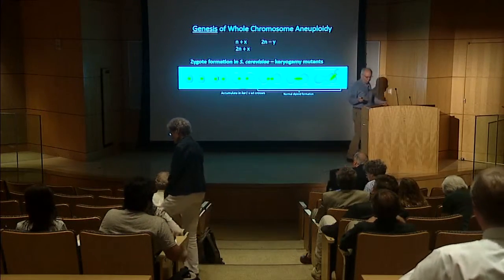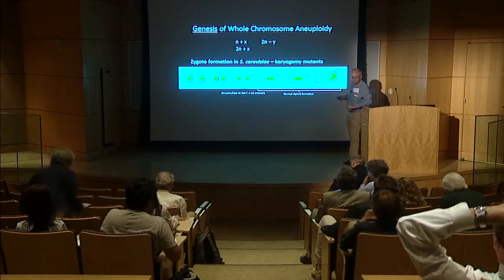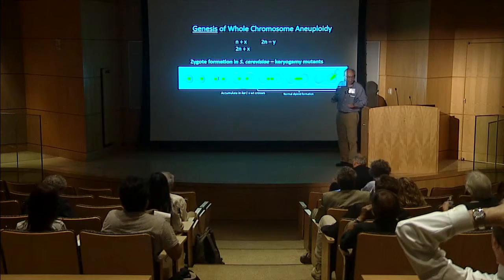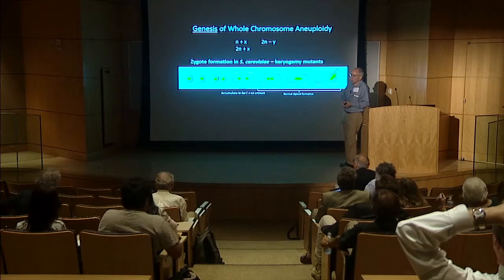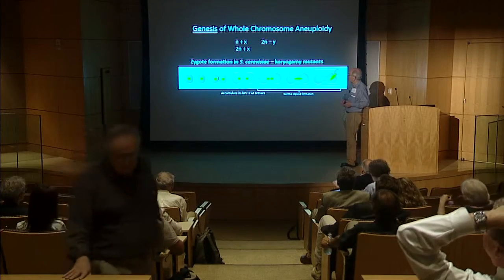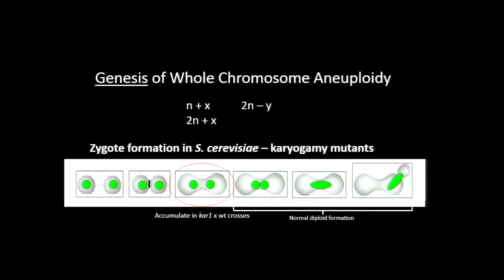Let's talk about whole chromosome aneuploidy from the genesis point of view, and this is very important. I'm interested in the inception of aneuploidy, not in the downstream further permutations of those initial changes. Whole chromosome aneuploidy — what I'm talking about is that set of events in which an otherwise haploid genome might have acquired one or more chromosomes, or a diploid genome might have lost one or more.